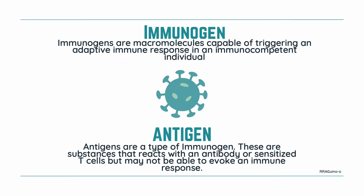Let's start by differentiating our immunogens from our antigens. Our immunogens are macromolecules capable of triggering an adaptive immune response in an immunocompetent individual — in other words, an immunogen is something that activates the immune system. Meanwhile, antigens are a type of immunogen. These are substances that react with an antibody or a sensitized T cell but may not be able to evoke an immune response. So all antigens react with antibodies, but not all of them may evoke an immune response, meaning not all antigens are immunogens but all immunogens are antigens.